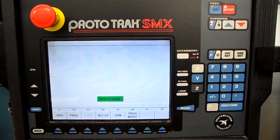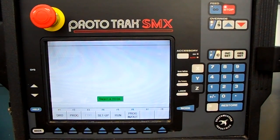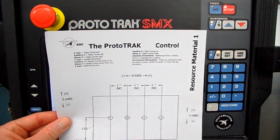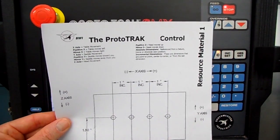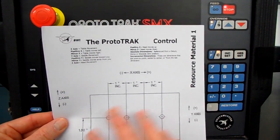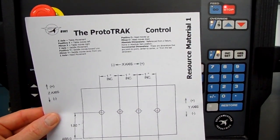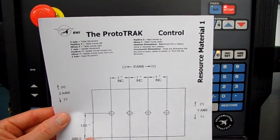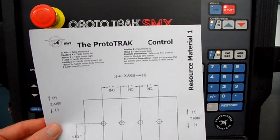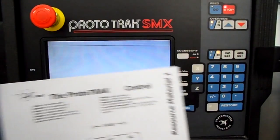What we'll do now is program a simple little job. Looking at the blueprint, it's just a plate with four holes. We're on the two-axis side of the control. The bottom left corner is our zero point. So we'll go in and program this right now.